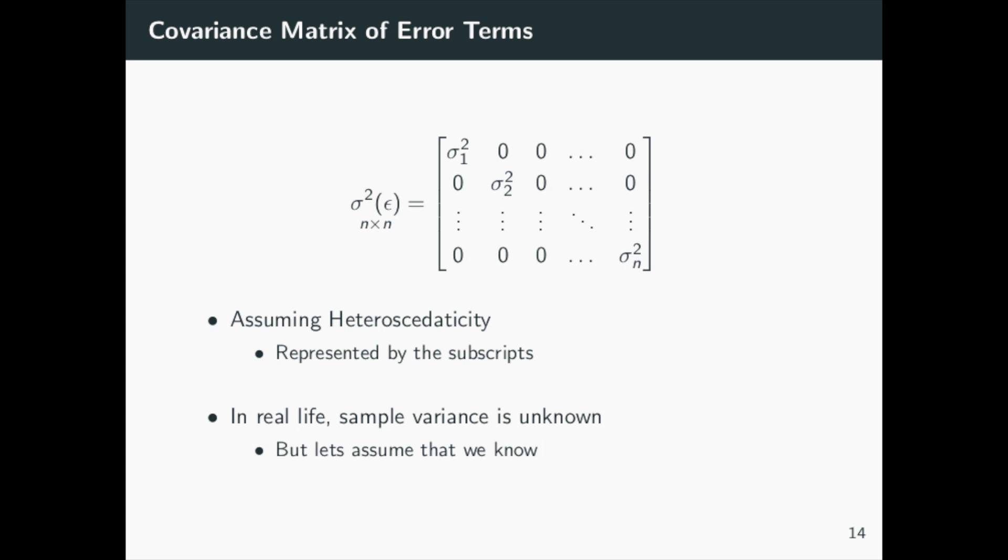Since we are now using a model with different values of variance, let's take a look at the variance covariance matrix. Like before, the matrix will be a diagonal matrix with the diagonal comprising of sigma squared.